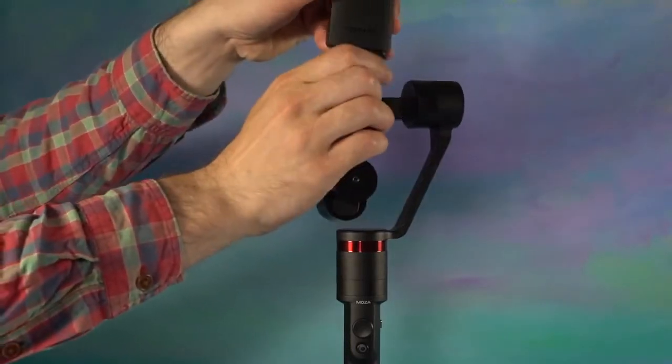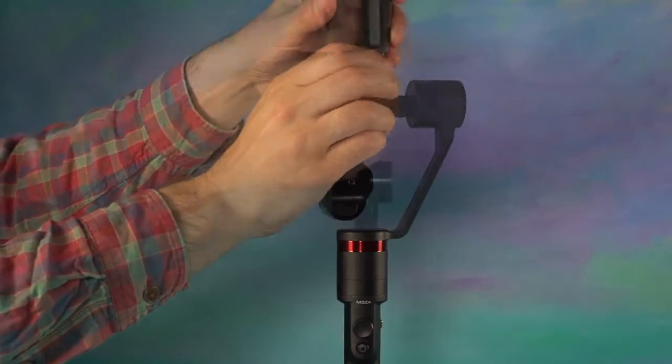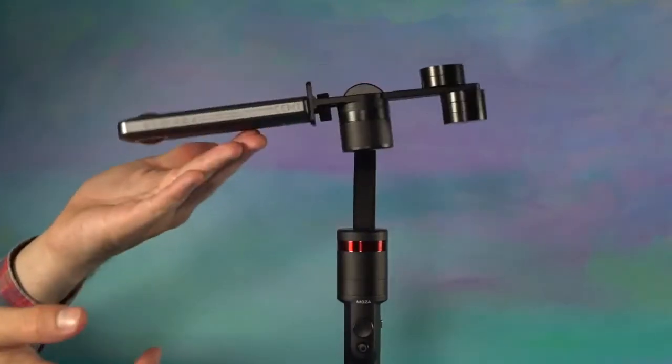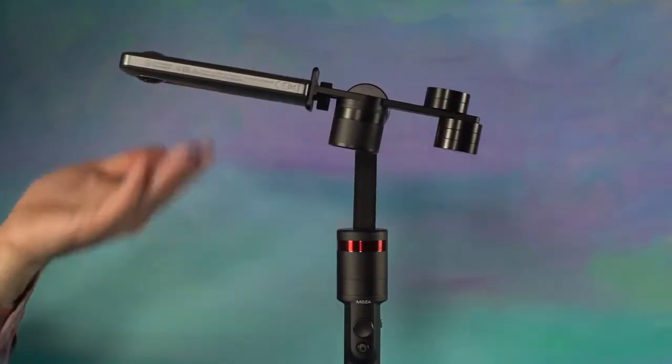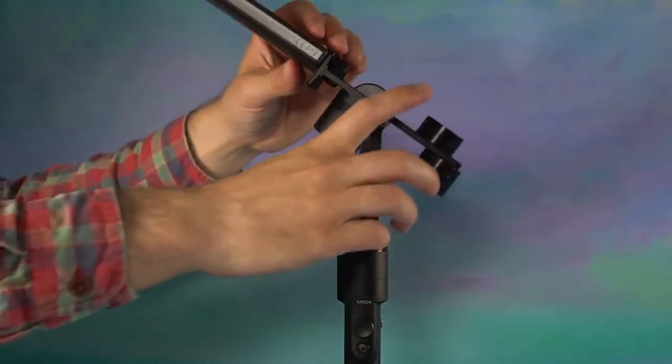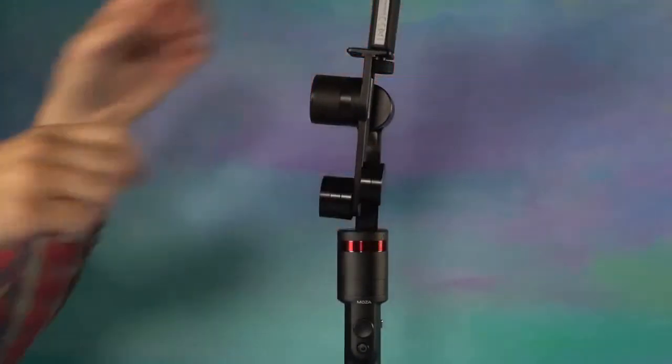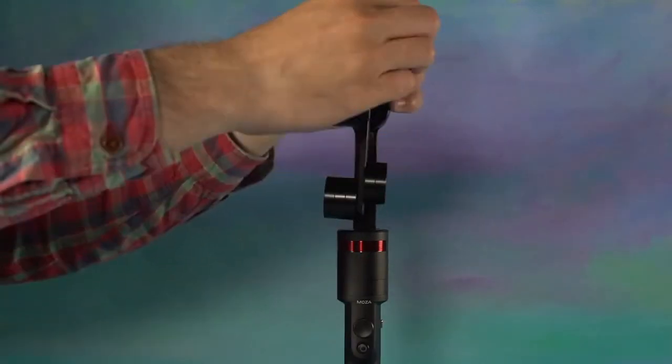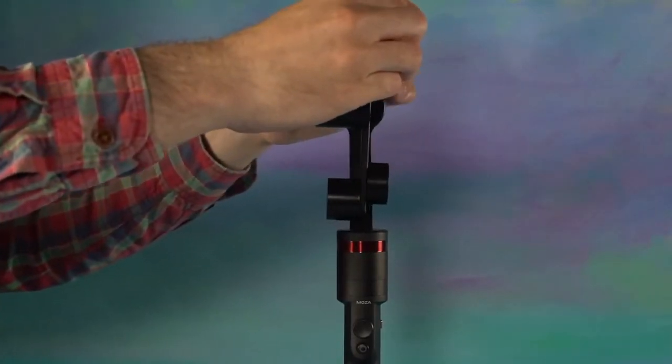Before hand tightening the thumb screw, check the camera's center of gravity. You may need to make adjustments from left to right to find the center of gravity. Once the center of gravity has been found, hand tighten the thumb screw. It's important to find the camera's center of gravity correctly on the stabilizer or you will encounter performance issues.